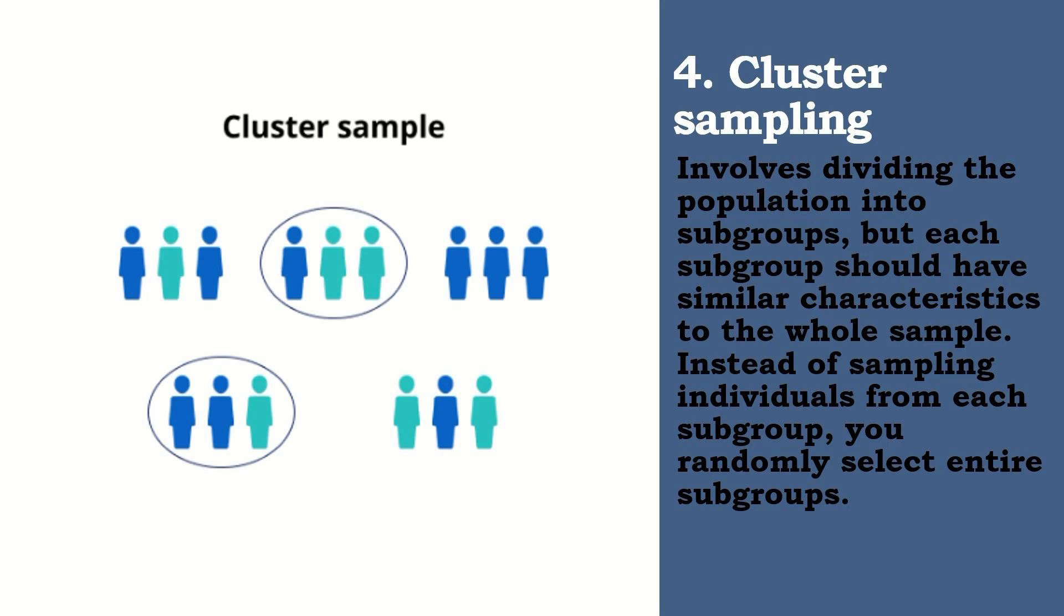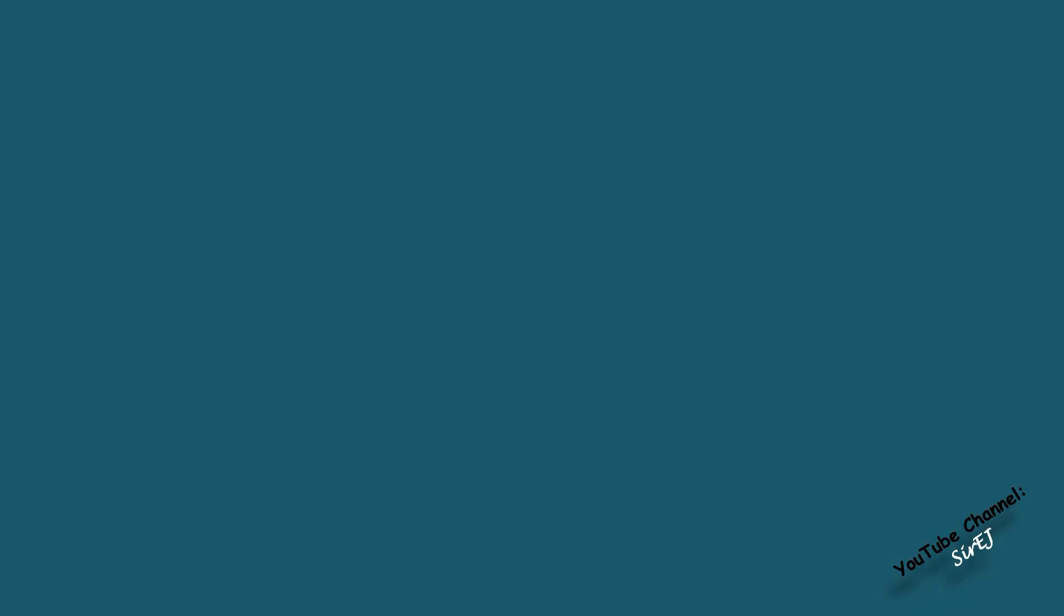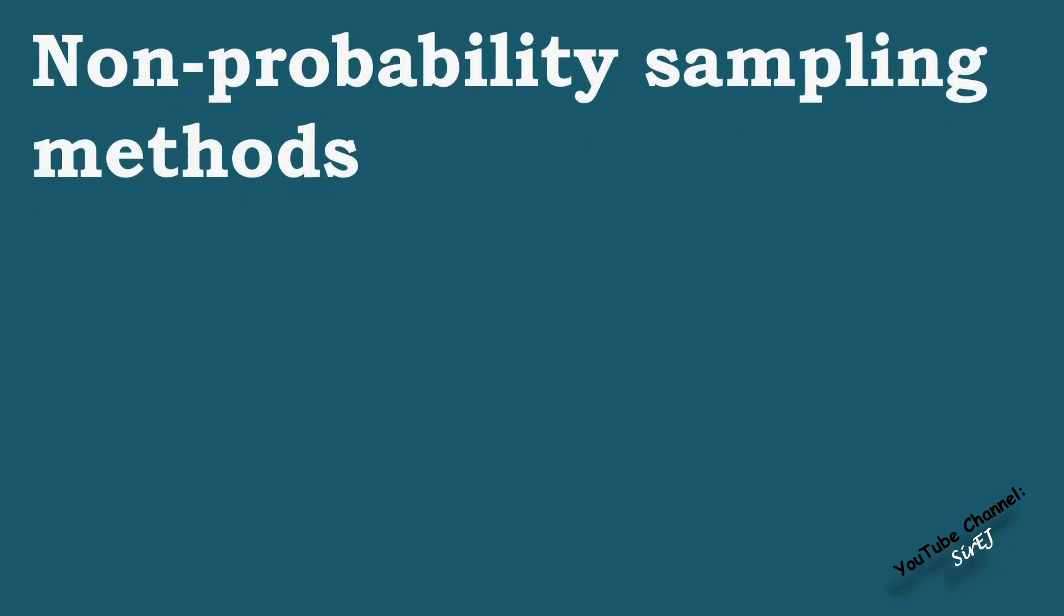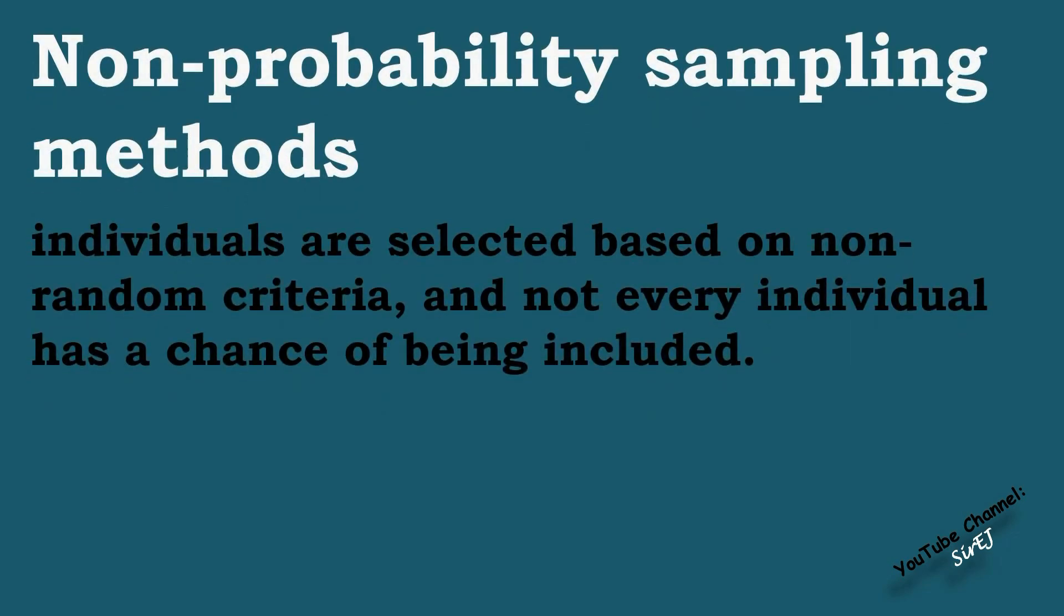The next type of sampling is the non-probability sampling. When we say non-probability sampling, individuals are selected based on non-random criteria and not every individual has a chance of being included. This type of sample is easier and cheaper to access. Pero, it has a higher risk of sampling bias. Ibig sabihin nito, the inferences you can make about the population are weaker than with probability samples.